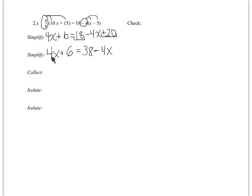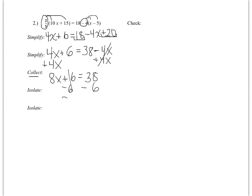Now when I collect, I have two choices — move the 5x or move the −4x. I'll add 4x to both sides. On the right, the 4x terms cancel out, and I'm left with 8x + 6 = 38. Now I isolate: subtract 6 from both sides to get 8x = 32, then divide both sides by 8 to get x = 4.